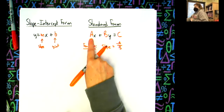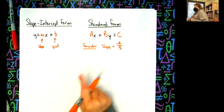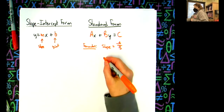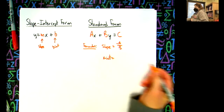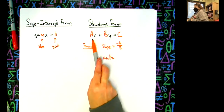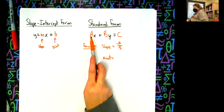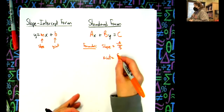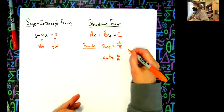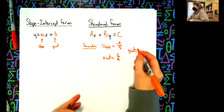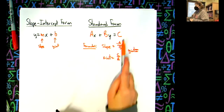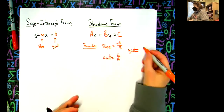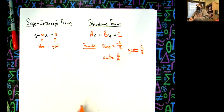So I just take the negative of whatever A is and put it over B, and that gives me the slope right away — takes about two seconds. If I want the x-intercept, it's C over A. And the y-intercept is C over B, because B is the coefficient in front of the y. Standard form doesn't work for you if you don't memorize those formulas.